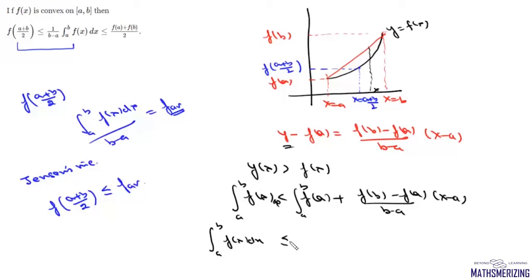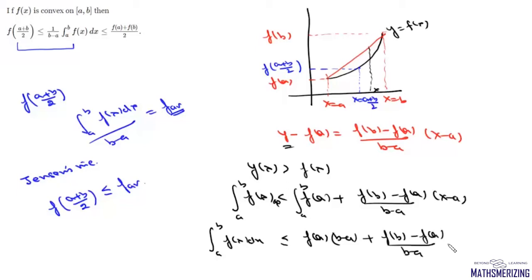We can write ∫[a to b] f(x) dx ≤ f(a)·(b − a) + (f(b) − f(a))/(b − a) · (x − a)²/2 evaluated, giving (b − a)²/2. Here (b − a) and (b − a) cancel.